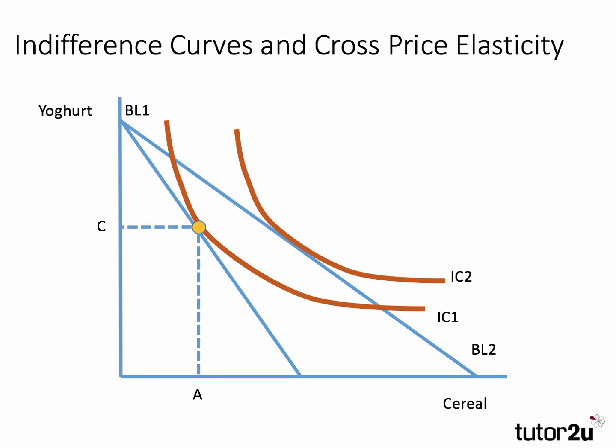What this allows the consumer to do is move on to a higher indifference curve. Indifference curves can't intersect, but the indifference curve the consumer can now reach is IC2, and there's a new point of tangency between that curve and budget line BL2. As a result the consumer can change their choices: they'll consume D amount of yogurt and B amount of cereal.